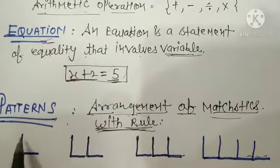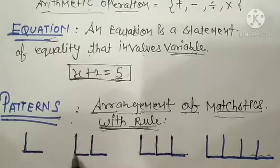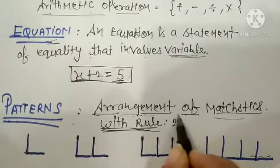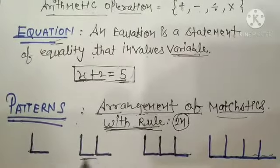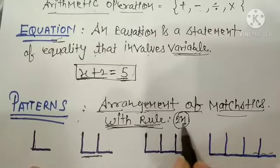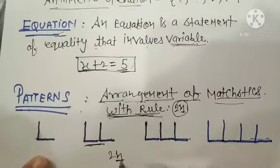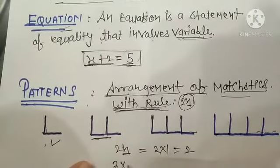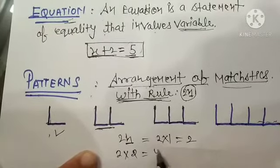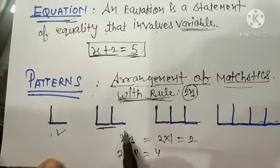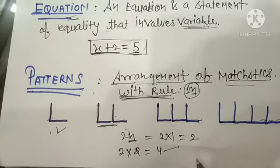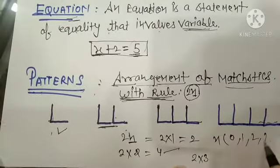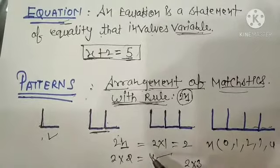For example, I have made a pattern using matchsticks. In the first figure I used 2 matchsticks, in the second figure 4 matchsticks. I wrote a rule: 2n. If n equals 1, then 2 into 1 is 2. If n equals 2, then 2 into 2 is 4. If n equals 3, then 2 into 3 is 6. The values of n go 1, 2, 3, 4 and so on. You can generate any pattern using the rule 2n.